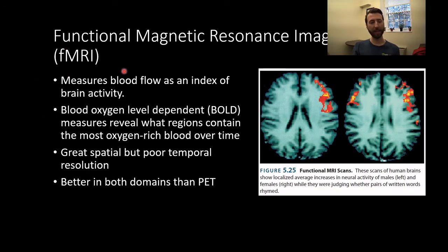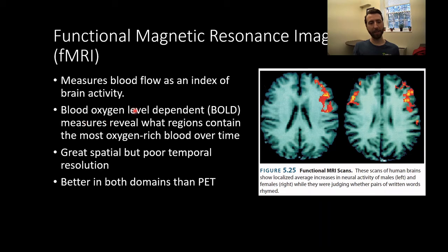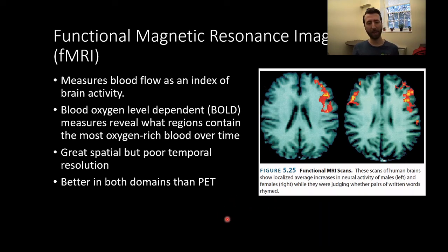fMRI, or functional magnetic resonance imaging, is similar to MRI in that it uses a big strong magnet to take advantage of the magnetic properties of certain elements of our brain. More specifically, fMRI measures blood flow as an index of brain activity — areas working harder use more oxygenated blood. What we get is a blood oxygen level dependent, or BOLD, signal. These measures reveal which regions contain the most oxygen-rich blood over time. Brain regions that are more active use more oxygen, so if we can measure oxygen use, we can infer that region has been more active. fMRI has great spatial but poor temporal resolution — pixel-perfect localization, but on the order of seconds rather than milliseconds.